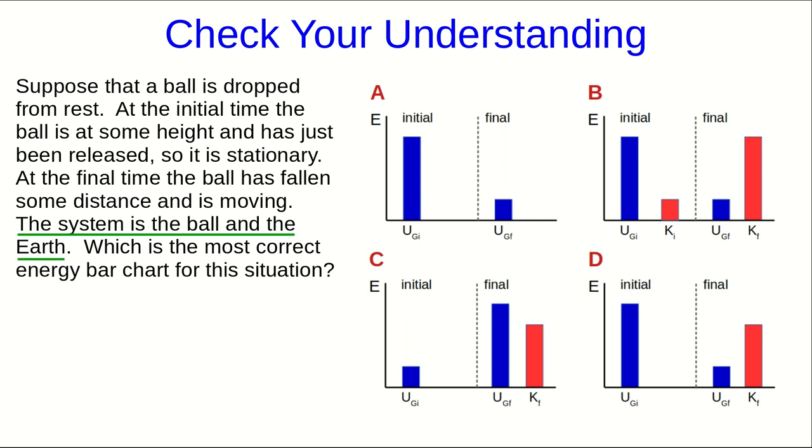And at this point, the system is the ball and the earth. This is sort of subtle and we haven't talked about this yet, so I'll just mention it now and I'll talk about it more later. But it's important that the system here includes both the ball and the earth. If it didn't, then the system wouldn't be able to have gravitational potential energy. I'll explain why that is later. For now, don't worry about it. So which of these bar charts is the most correct energy bar chart?